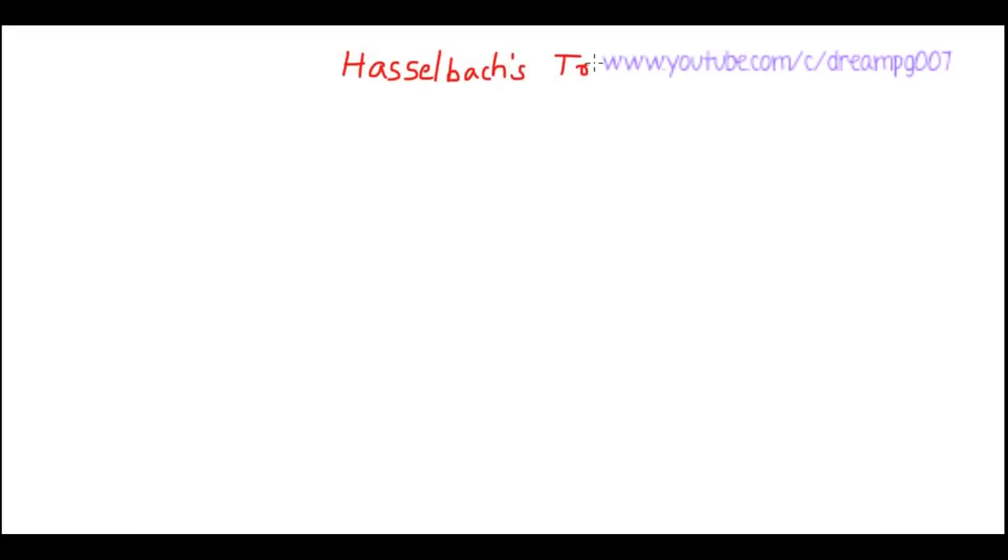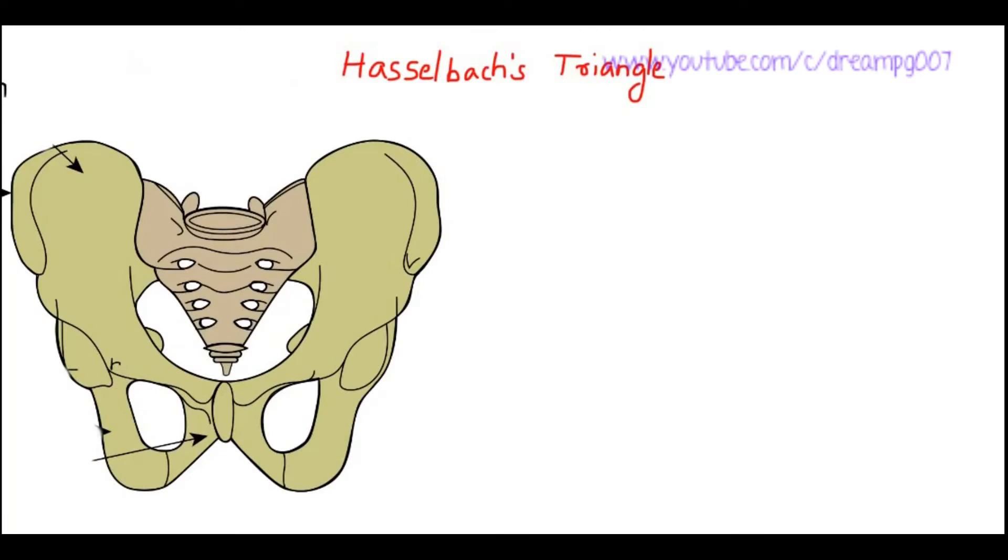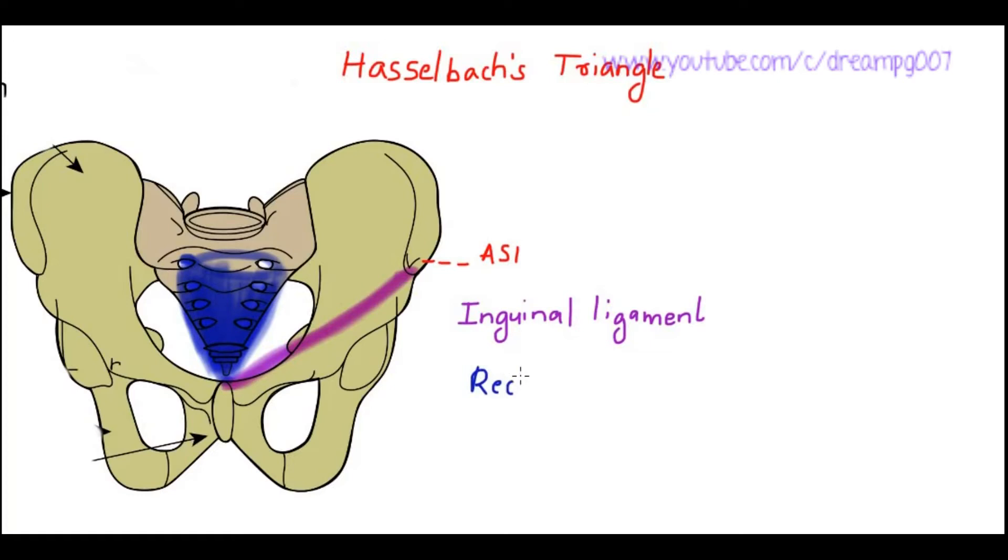Let's deal with the anatomy of Hasselbach's triangle. This is the anterior superior iliac spine. The ligament which is running from anterior superior iliac spine to pubic symphysis is the inguinal ligament, and in this area we can see the rectus muscle which is covered by the rectus sheath. This is the inferior epigastric vessels which is running here, and this triangle is the Hasselbach's triangle.